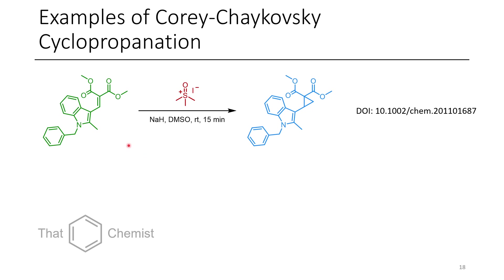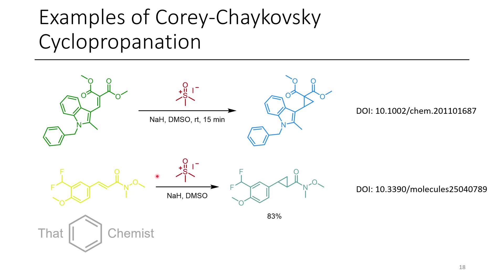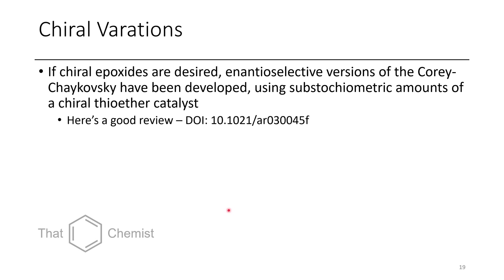In the case of cyclopropanation, some examples include the cyclopropanation of an indole-containing Michael acceptor as well as a cinnamate derivative that also has a CF₂ group — the CF₂ was prepared from the corresponding aldehyde with a carboxylic acid using a clever use of deoxofluor. There have also been some chiral variations using catalytic or stoichiometric amounts of thioethers; if you're interested, there's a review from Agarwal's group.